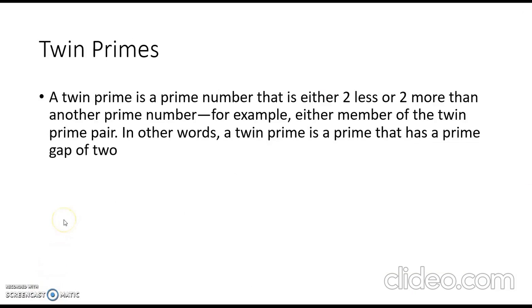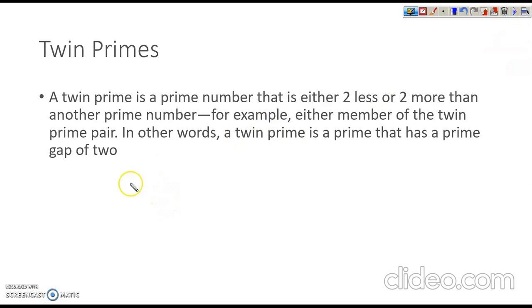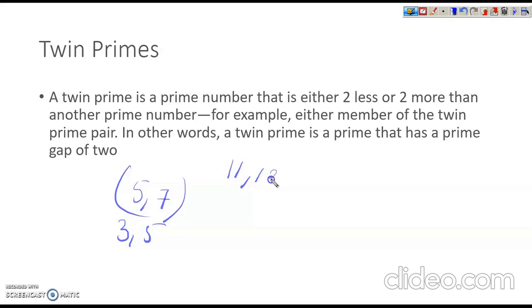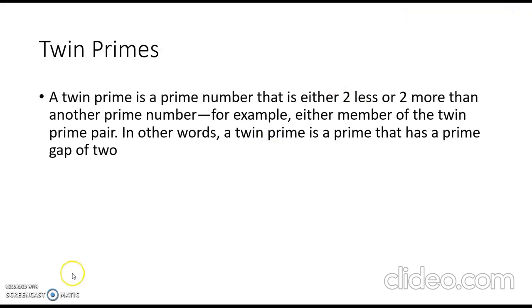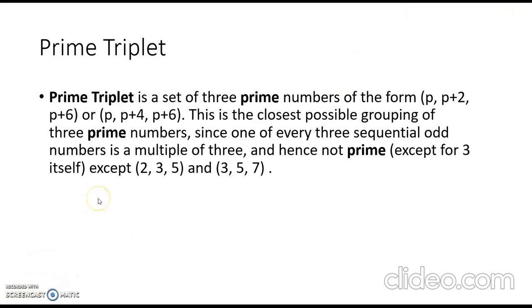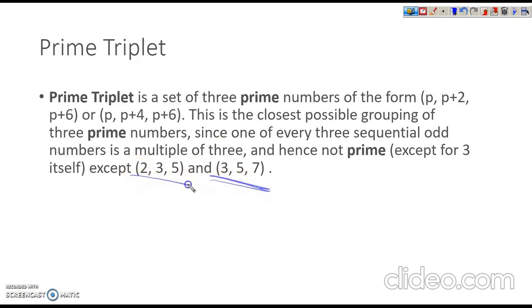Twin primes are prime numbers differing by 2. For example, 5 and 7 are twin primes, and 3 and 5 are twin primes. Another example: 11 and 13 are twin primes. A prime triplet is a set of three consecutive prime numbers — for example, 3, 5, 7 or 2, 3, 5.